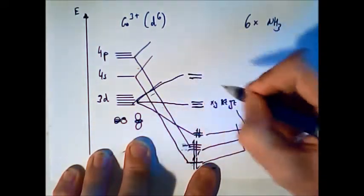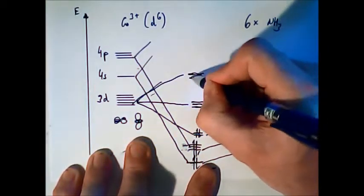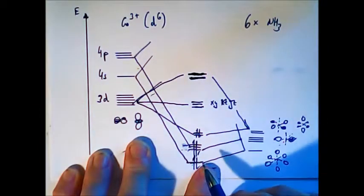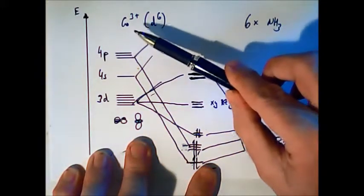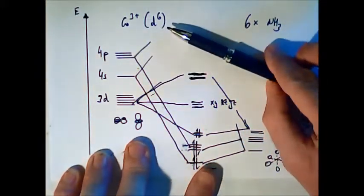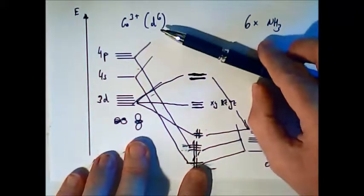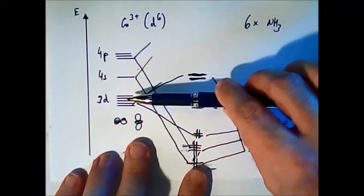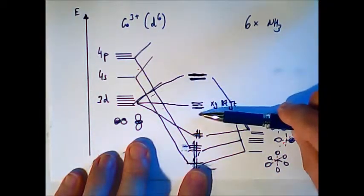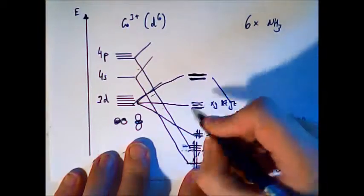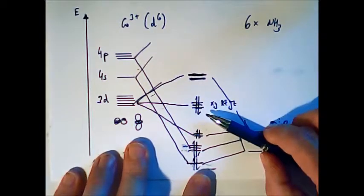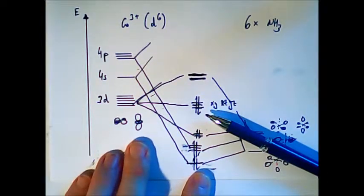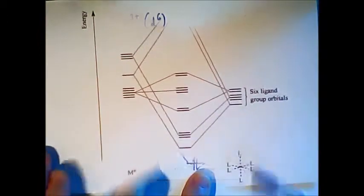And I have to draw here the antibonding case as well. Now how many electrons coming from the cobalt-3-plus? When we check the periodic table we find that cobalt-3-plus should have six d electrons. Now I have to fill these three orbitals with six electrons. And these coming from the metal. And they are non-bonding.